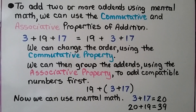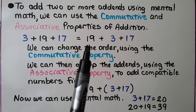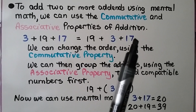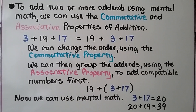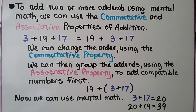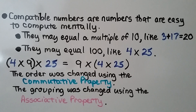To add 2 or more addends using mental math, we can use the commutative and associative properties of addition. We have 3 plus 19 plus 17. It's equal to 19 plus 3 plus 17 — we changed the order using the commutative property. We can group the addends using the associative property to add compatible numbers first. 3 plus 17 equals 20, and 20 plus 19 is equal to 39. Compatible numbers are numbers that are easy to compute mentally — they may equal a multiple of 10, like 3 plus 17 equals 20.